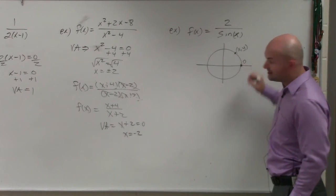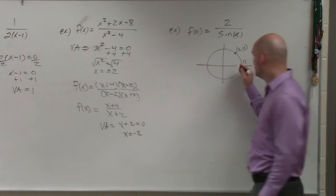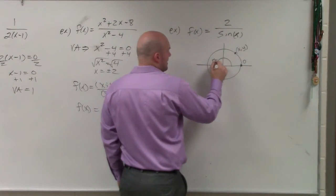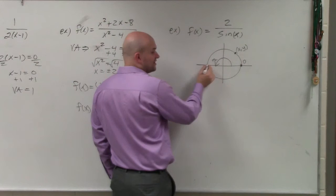So at what angle is sine going to be 0? Well, at this point, at the angle 0, sine is 0. And at this angle, which is pi, the sine value is 0 as well.